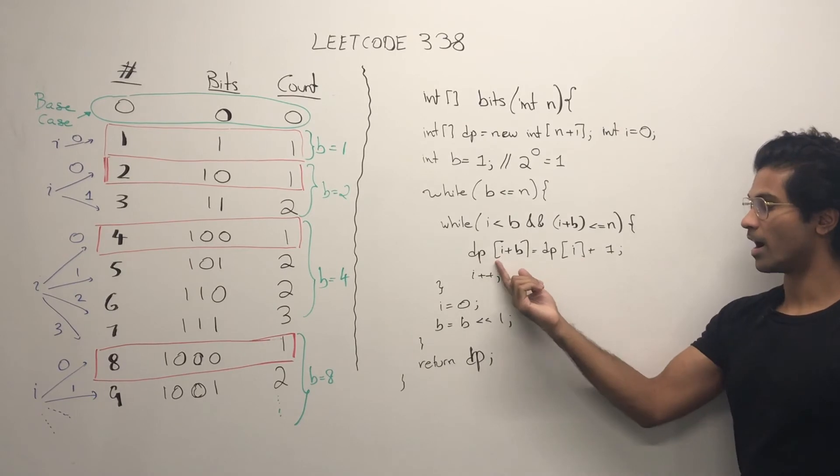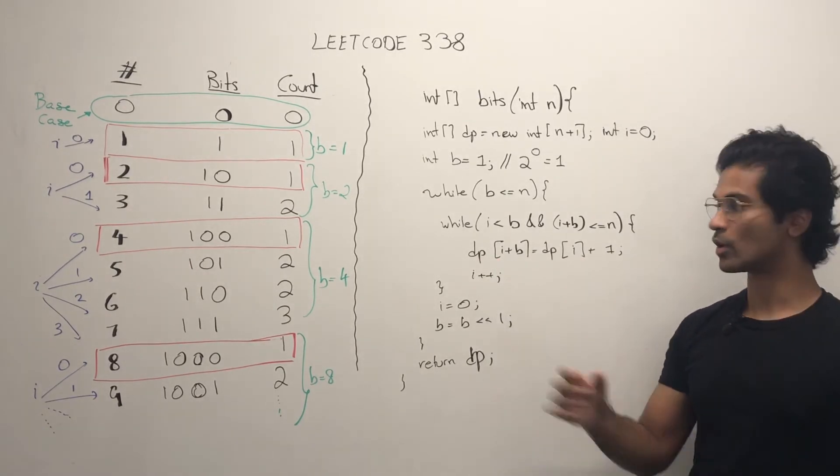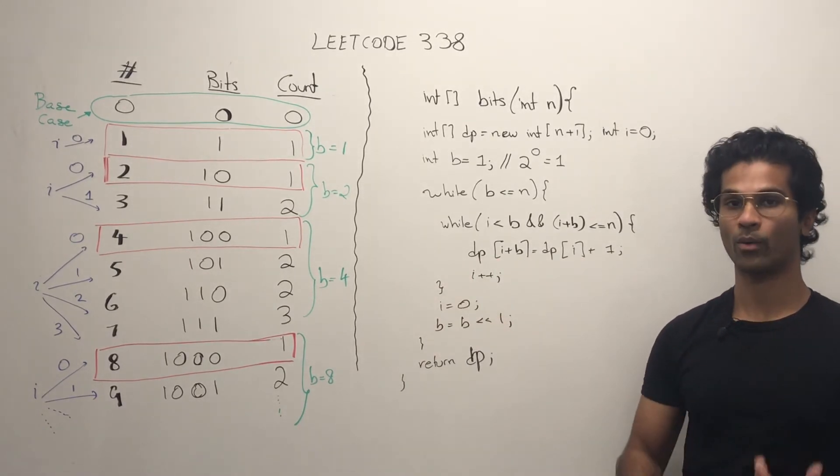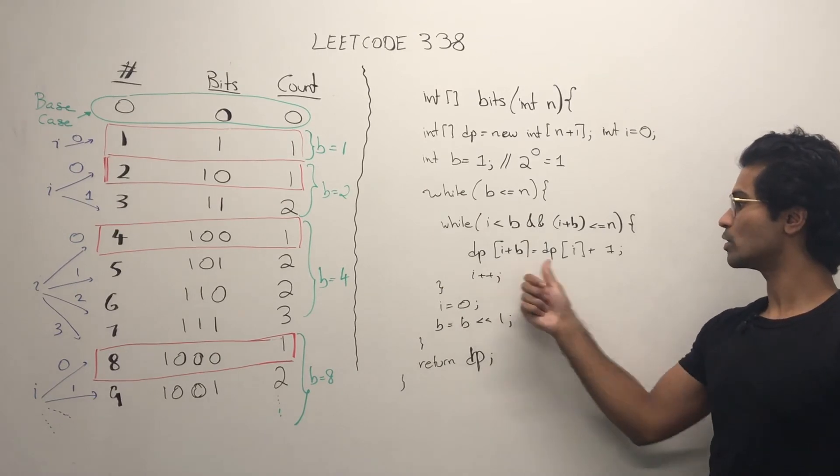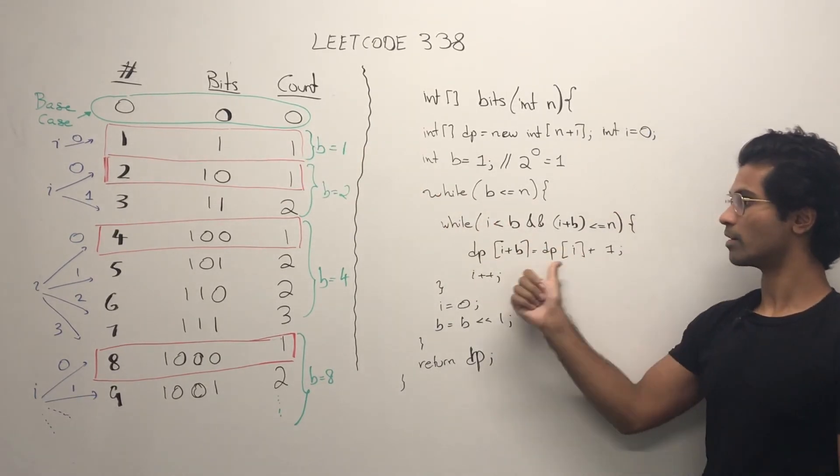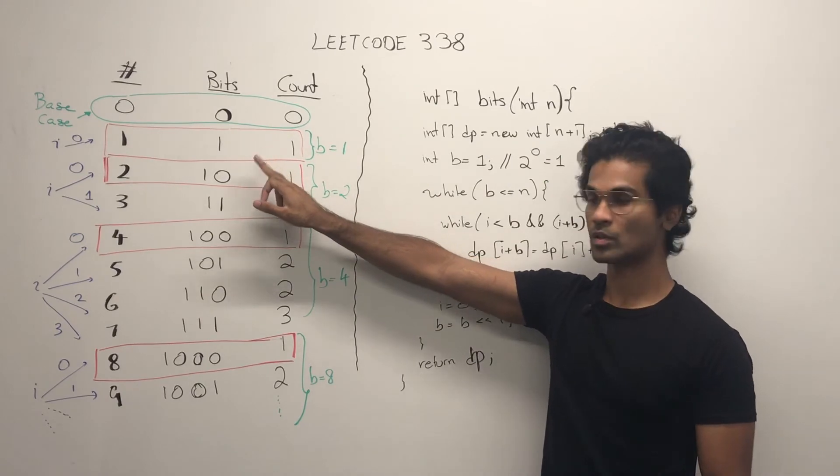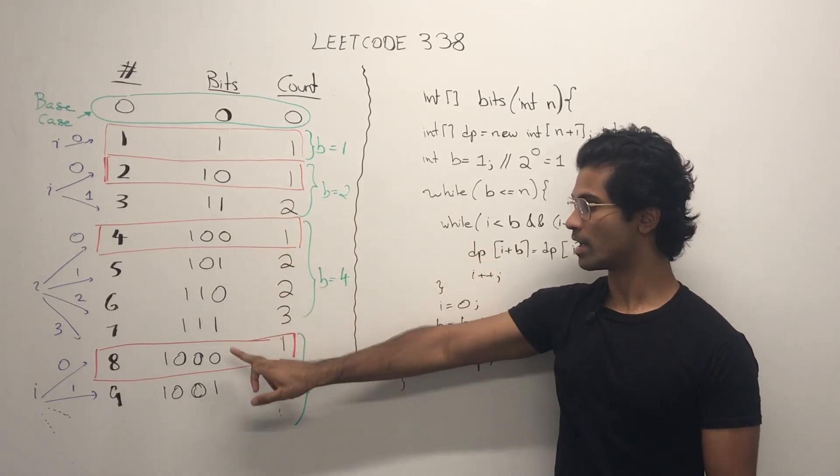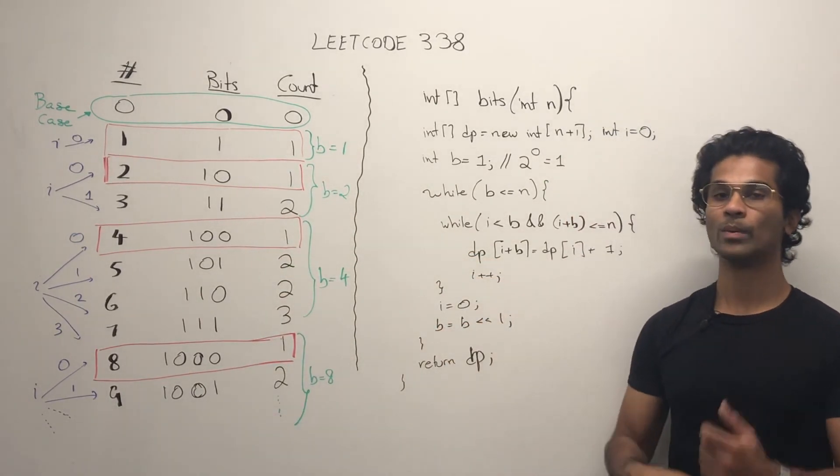So DP of i plus B, we're always going to start this while loop with a power of 2, and it's going to reuse the base case. So 0 plus 1. This is 0 plus 1, 0 plus 1, 0 plus 1, and 0 plus 1.